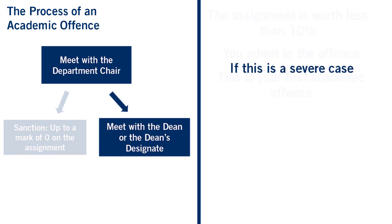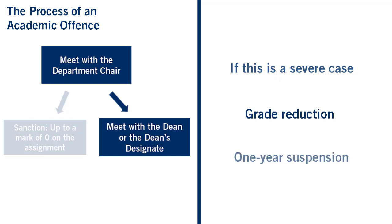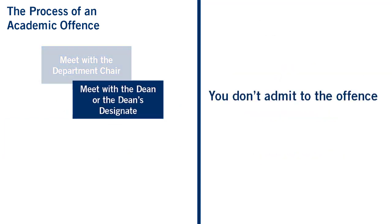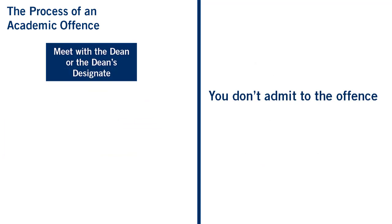Depending on the severity of the case, the chair can forward the case to the office of the dean for additional consequences. Some of the possible sanctions can range from an additional grade reduction to a one-year suspension from the University of Toronto. If you do not admit to the offense, you'll meet with the dean or the dean's designate.